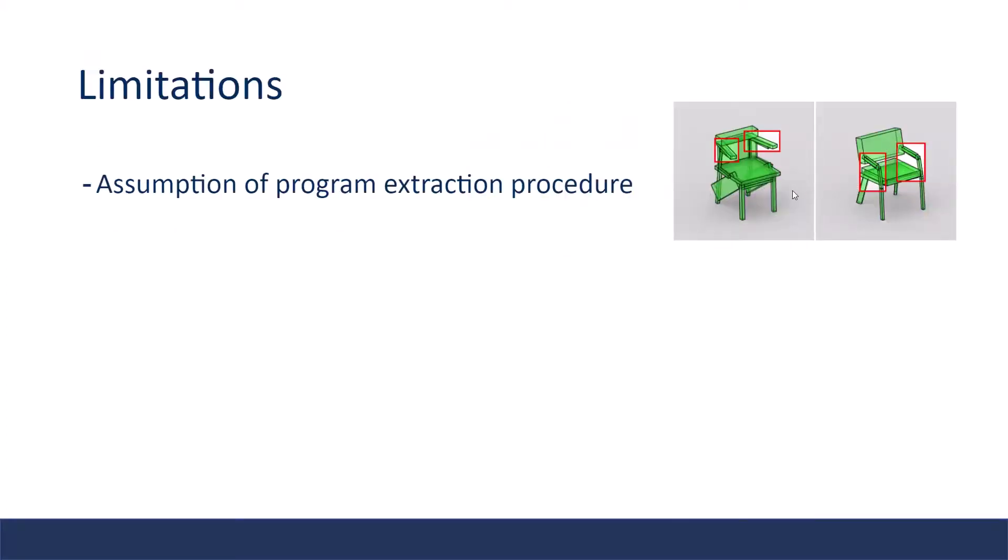However, this generative model also has many limitations. Firstly, the program extraction procedure assumes that the orientation of all parts can be specified through solely part-to-part attachment. However, this is not held for all shapes. In this figure, the orientation of the arms cannot be inferred from part-to-part attachment alone. Those shapes are excluded from the dataset, and the generative model never learned and cannot produce such types of shapes.